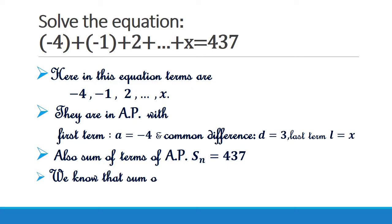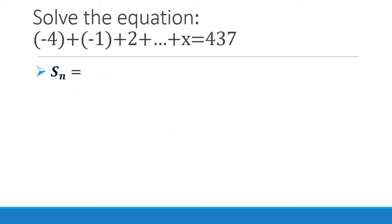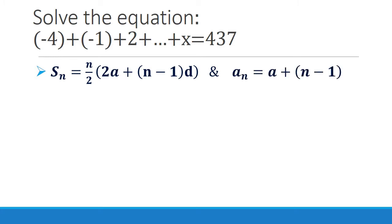We know that the sum of n terms of an AP and the nth term of an AP are given by: S_n equal to n by 2 into 2a plus n minus 1 into d, and A_n equal to a plus n minus 1 into d. Using these, we can find the sum and the general term of an AP.